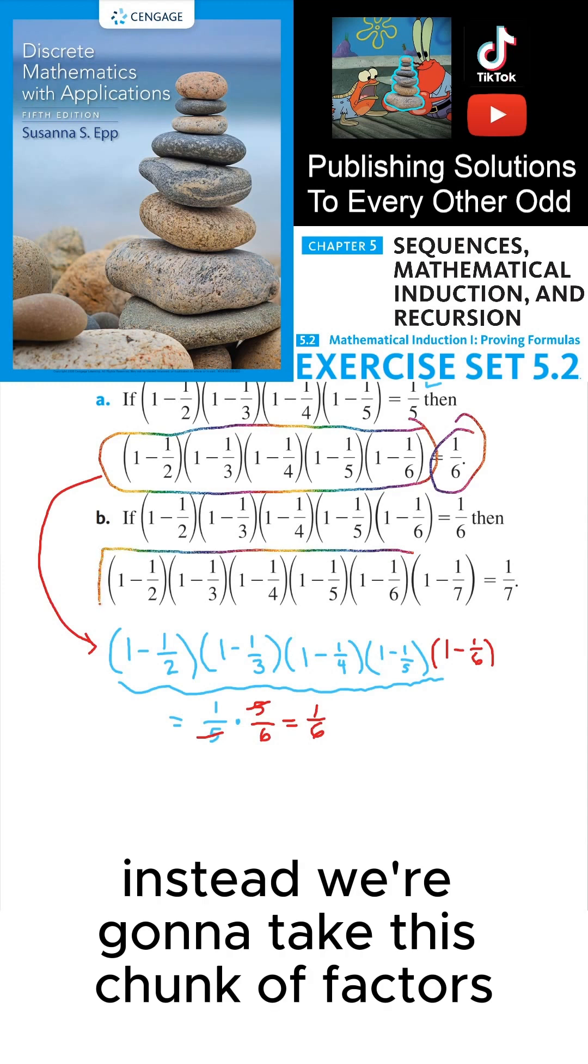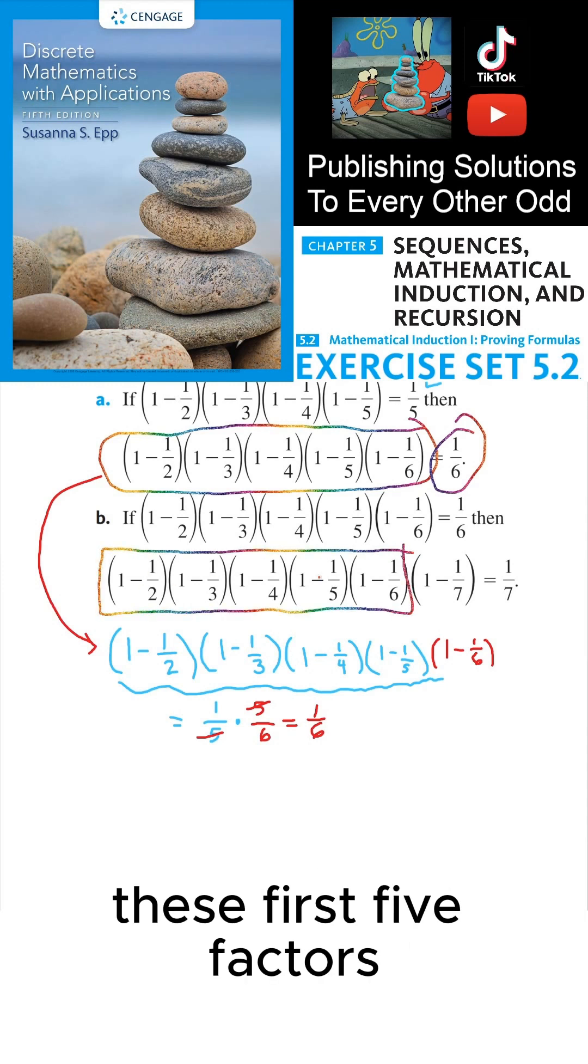Instead, we're going to take this chunk of factors. These first five factors, when you multiply them together, we get 1/6.